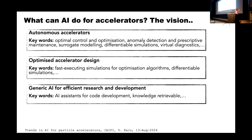This was an introduction to illustrate our vision for what AI can do with accelerators — essentially three things. First, autonomous accelerators, with algorithms for optimal control, optimization, anomaly detection, and prescriptive maintenance. Second, AI for optimized accelerator design for future machines and upgrades, involving fast-executing differentiable simulations coupled with optimization algorithms. Third, leveraging what is coming from industry — generative AI for efficient R&D, including AI systems for code development and knowledge retrieval.